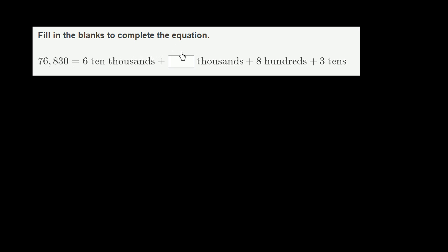Fill in the blanks to complete the equation. So they have 76,830 is equal to 6 ten thousands plus blank thousands plus 8 hundreds plus 3 tens. So let's just think about 76,830.